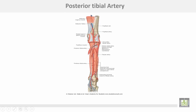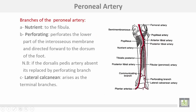This is the posterior view: the popliteal artery at the lower border of the popliteus muscle gives two terminals — the posterior tibial directed backwards and the anterior tibial directed forwards. From the posterior tibial, a large branch arises called the peroneal or fibular artery. The peroneal artery gives many branches: a nutrient artery to the fibula, perforating branches that perforate the lower part of the interosseous membrane and are directed forwards to the dorsum of the foot. If the dorsalis pedis artery is absent, it is replaced by the perforating branch of the peroneal artery. The lateral calcaneal branch arises as the terminal branch of the peroneal artery.